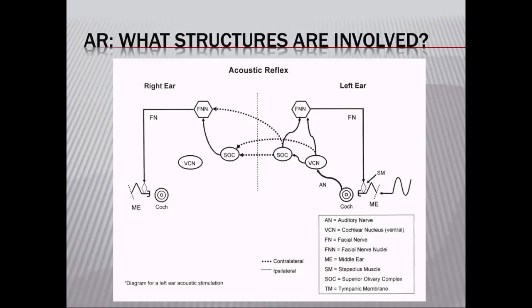Looking at the structures involved in the acoustic reflex: the stapedius muscle is in the middle ear on the left ear side of this diagram. Sound travels through the middle ear to the cochlea, from the cochlea up the auditory nerve, from the auditory nerve to the ventral cochlear nucleus, from the ventral cochlear nucleus up to the superior olivary complex and the facial nerve nucleus on the same side, and then from the facial nerve nucleus back down via the facial nerve, which innervates the stapedius muscle and activates it.